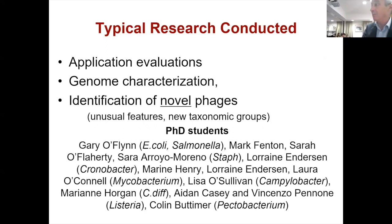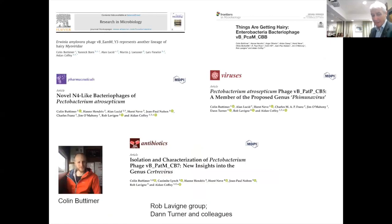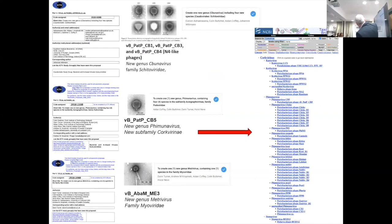These are all the PhD students that we've worked with over the years. I'll just mention the last student, Colin Bottomer. He presented here in 2017 — his work was about the Enterobacteriaceae responsible for potato disease, and he isolated a number of phages from that. He established a collaboration with taxonomist Dan Turner, produced seven papers for his PhD, identified three new genera, one new subfamily, and we were allowed to name the subfamily after Cork.